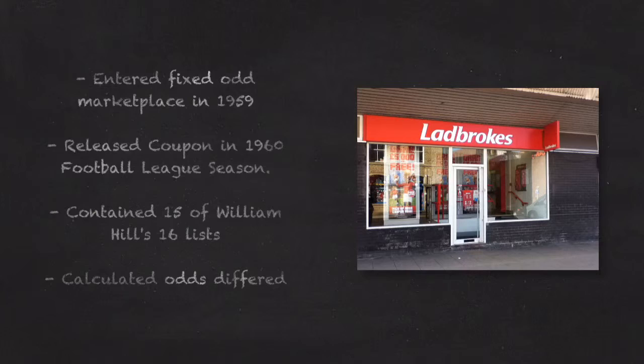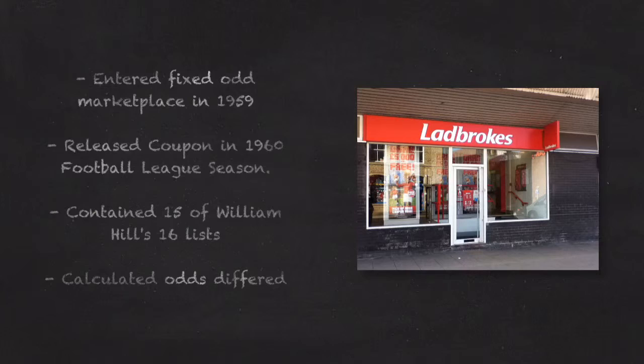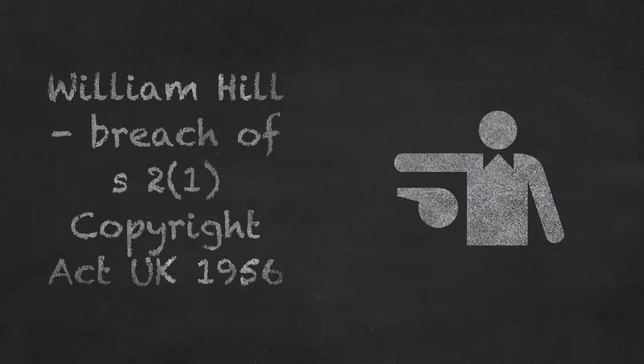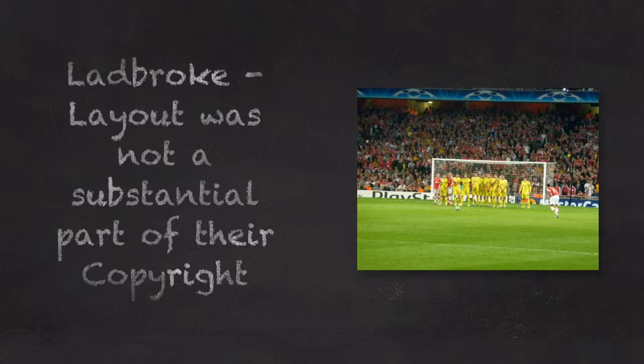The odds on their coupons differed however, as they would have had to have been calculated individually to publish them on time. William Hill claimed Ladbroke had infringed copyright they held in the coupon, under section 2.1 of the Copyright Act UK 1956 as an original work. Ladbroke's defence was that they were entitled to use a good idea by William Hill, and that they had merely copied a few individual parts of William Hill's coupon, and not a substantial part.